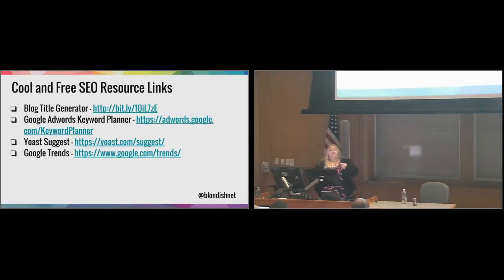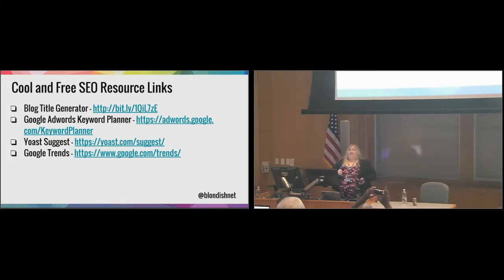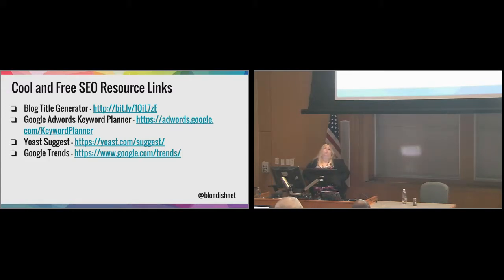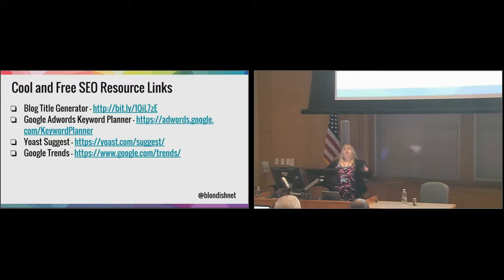That also goes into my cool resource links. One of my friends, Kimberly Morris Gauthier, was the keynote speaker at WordCamp Seattle. She introduced a cool tool that you can use to generate blog titles — basically you put the keyword in and you can come up with all sorts of wonderful and colorful titles. For research, I really like Google AdWords Keyword Planner, Yoast Suggest, and Google Trends. Google Trends is really good so you can keep on hot topics, especially for fashion, news, or anything with current events.